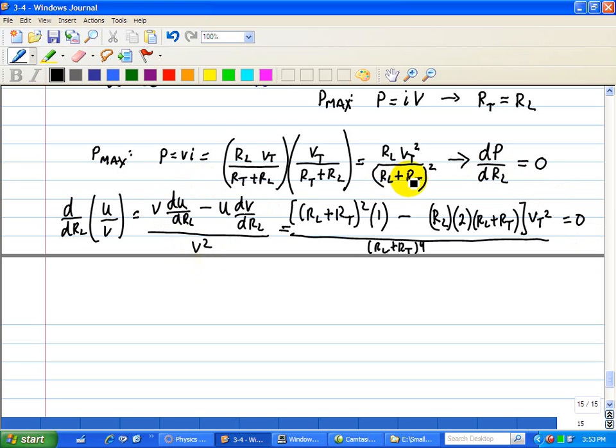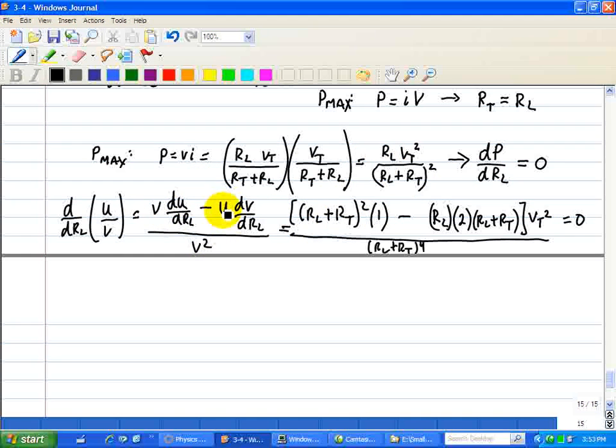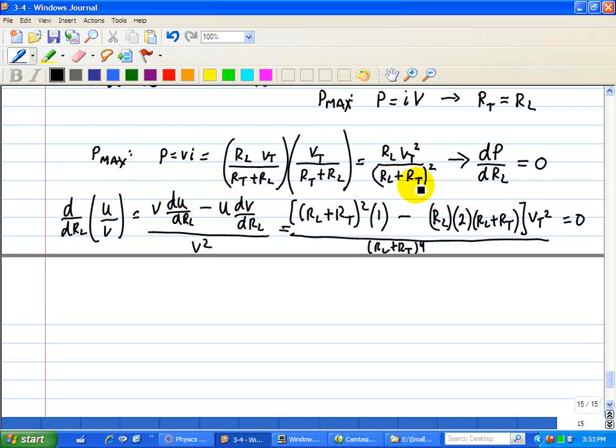So here, V is just simply RL plus RT quantity squared, derivative of the numerator, derivative of RL is just 1, minus U, which is just RL, and derivative of the denominator is just 2RL plus RT, as shown here. All that multiplied by VT squared, which doesn't play a major role because we're going to set the resistors right here, this expression, the resistor expression, equal to 0.